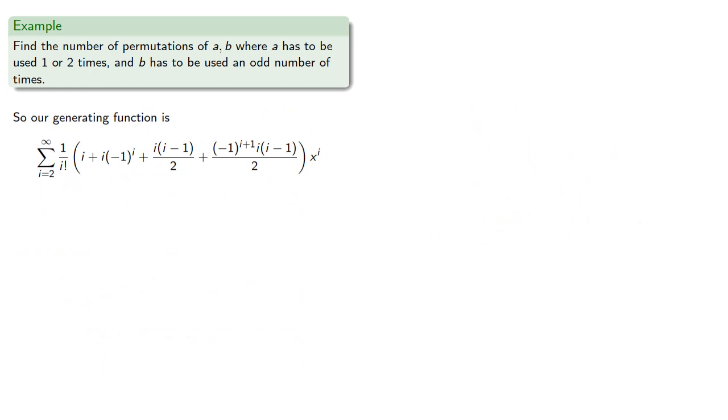So after all that work, we get our generating function, and the coefficients give us the number of n permutations. Now, since our series begins at i equals 2, that means our first two coefficients are actually 0. So the number of n permutations is 0 if n equals 0, and 0 if n equals 1.